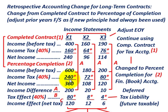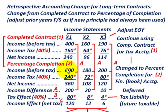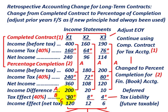With greater income under the percentage of completion method, we also have greater taxes. Income tax at 40% of $400,000 gives $160,000 under the completed contract method. For percentage of completion, 40% of $600,000 gives $240,000. The tax effect is $80,000 — the difference between the two tax amounts — or equivalently, 40% of the $200,000 income difference.